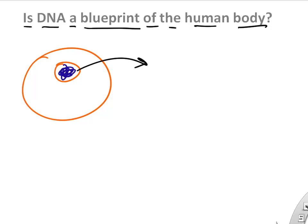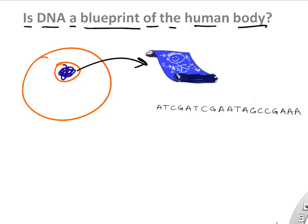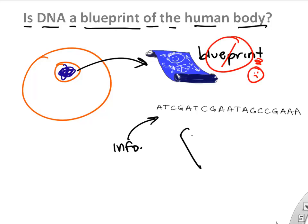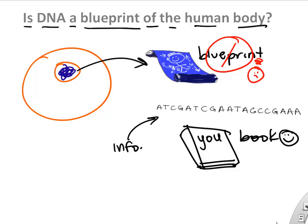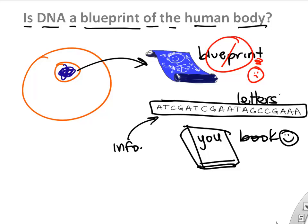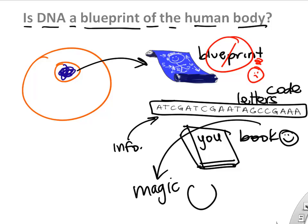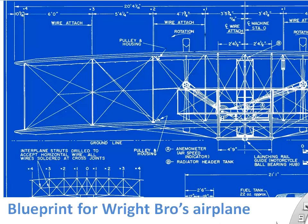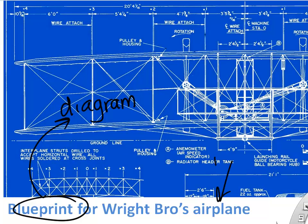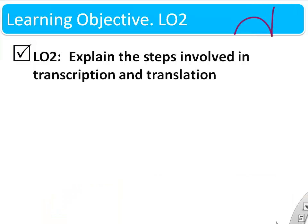Is DNA a blueprint of the human body? When I think of a blueprint, I think of it as a diagram. But given what we've just learned about DNA, is it really a map of your body? It's really just A, T, C, G's — nucleotides in a sequence. I like the better analogy that DNA is a book of information — a book of you — really just a book with information to build proteins. How that all translates into building a human body is still an area of curiosity. Here's a real blueprint — a diagram that tells you how to build a plane — but I don't know if that's the best analogy for DNA.